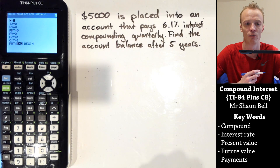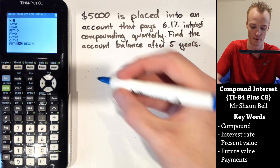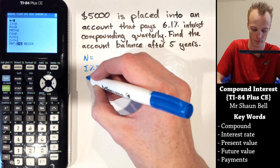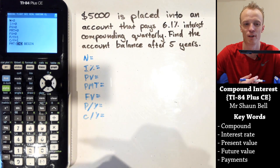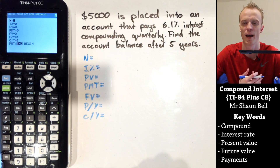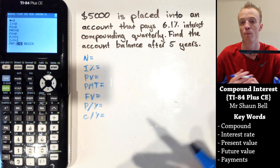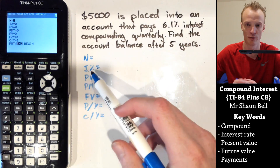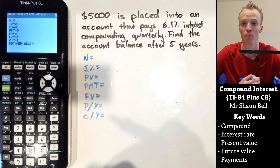Let's look through the different information you can find and need to enter into the calculator. The capital N value represents how many times in total the interest is going to compound for the entire investment. To find that, multiply the number of years by how often it's compounding. The I% represents the interest rate as a percentage.